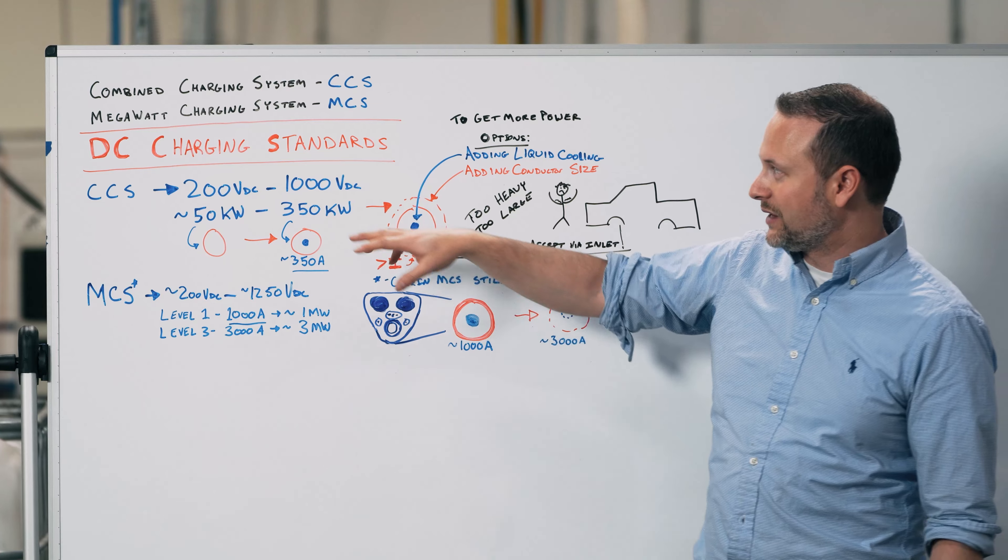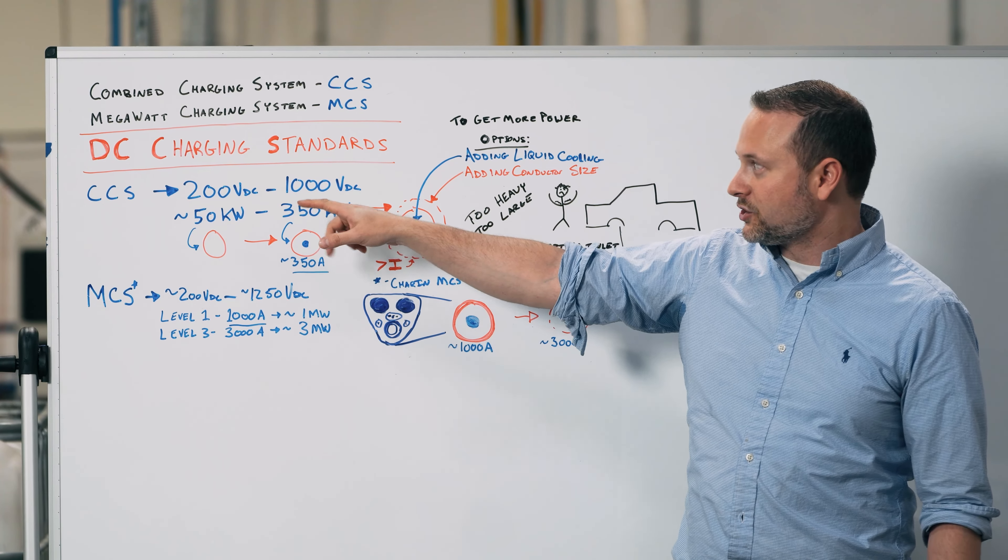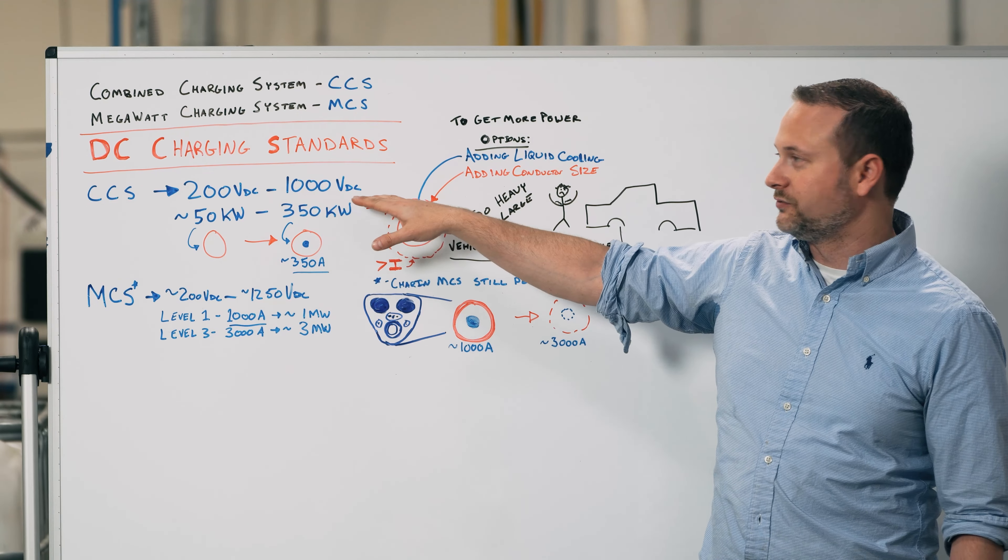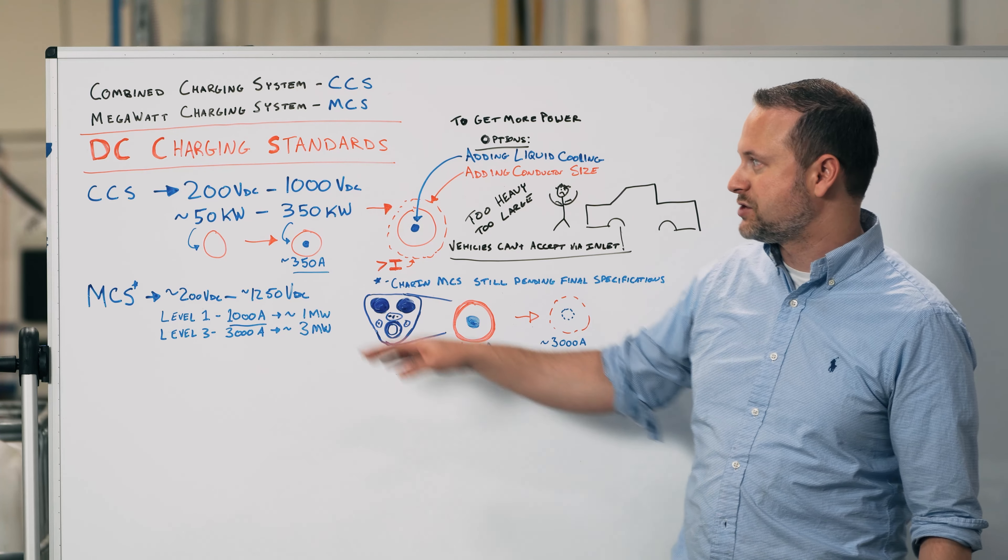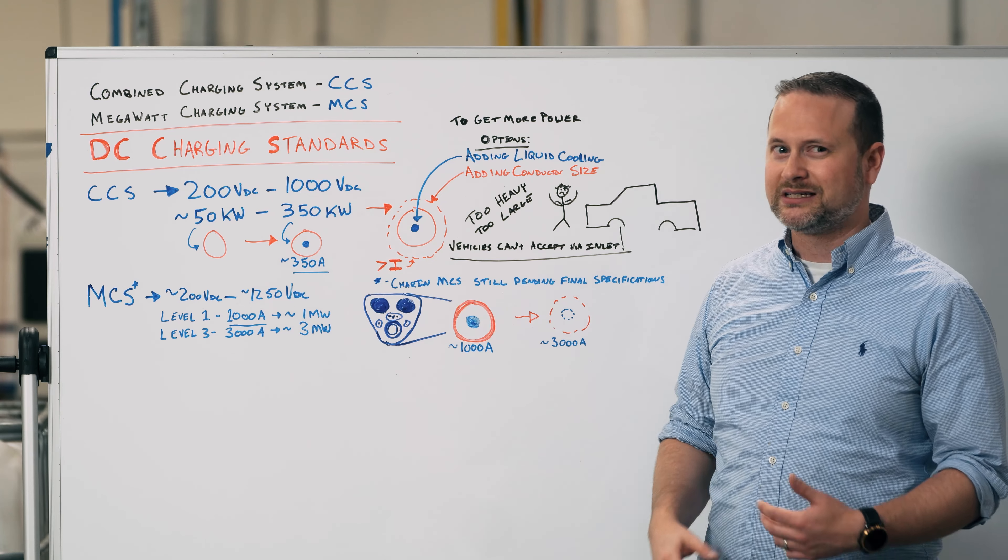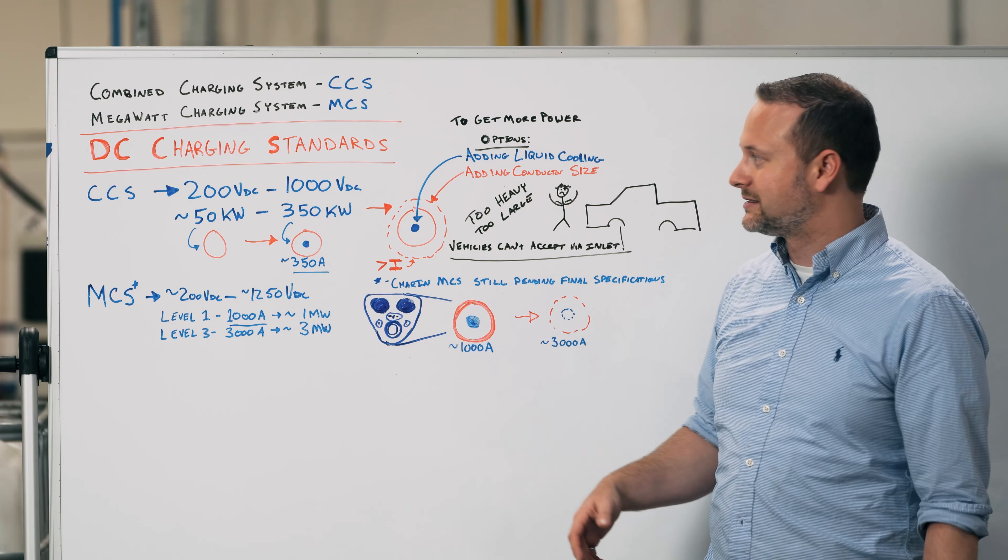And the standard is written and set in stone as written here. It is currently 200 volts DC to 1,000 volts DC. What you see publicly in terms of charging stations range between 50 kilowatts to 350 kilowatts. It's rare to see anything higher than that, but it exists here and there.